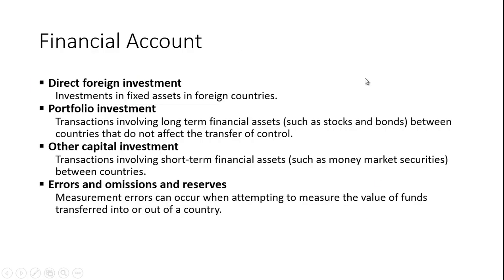The financial account consists of direct foreign investment — investments in fixed assets in foreign countries. If a company purchases part of a company in another country, they need at least 10% ownership for it to be considered direct foreign investment; while not controlling interest, it's enough to have some influence. Portfolio investment involves transactions with long-term financial assets such as stocks and bonds between countries that do not affect the transfer of control. Other capital investment transactions involving short-term financial assets such as money market securities are also included. There's also a section for errors and omissions and reserves, as measurement errors can occur when estimating the value of funds transferred.